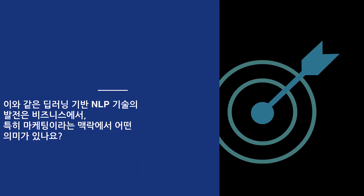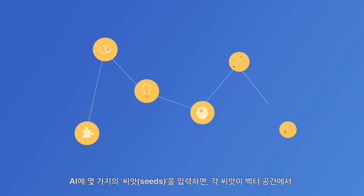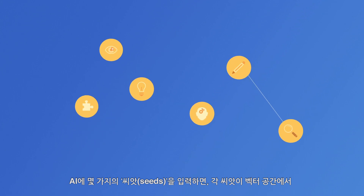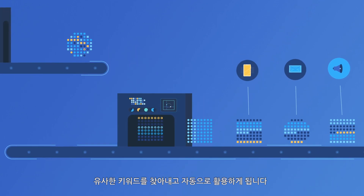So with this word vector, the performance of a lot of NLP tasks actually improved significantly. One could already use the word vector for keyword-based marketing. Before this breakthrough, marketers usually needed to enumerate a large list of target keywords. However, now marketers just need to give AI a few seeds, and then in the vector space, each seed will find similar keywords and use them automatically.